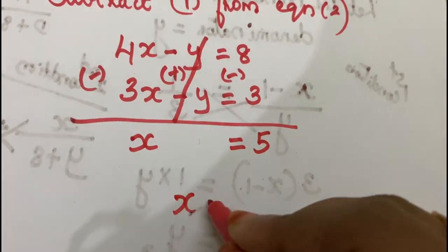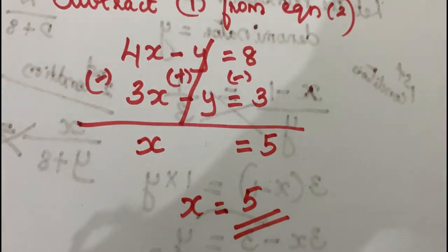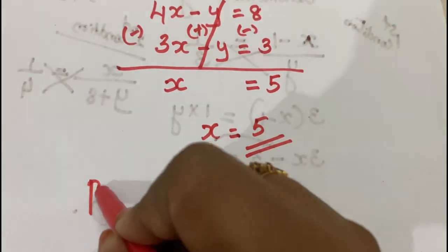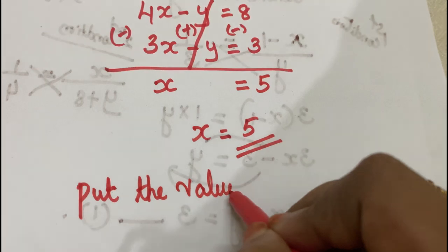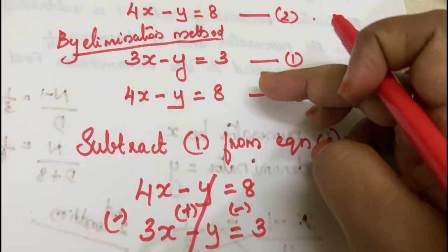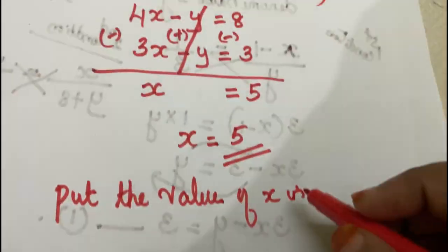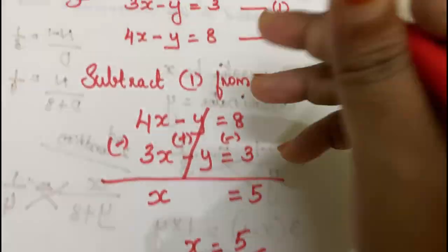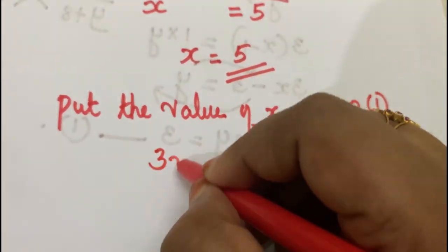x is equal to 5. Now we substitute the value of x into equation 1. Equation 1 is 3x minus y equals 3. Substituting x equals 5, we get 3 into 5 minus y equals 3.